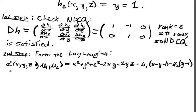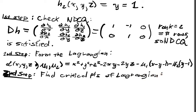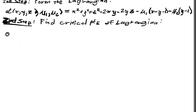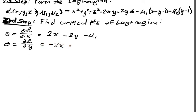And now we figure out what the critical points have to satisfy. So the critical points, so the second step, or the third step, rather, is find the critical points of the Lagrangian. So we compute, we have to have that zero equals dL/dx, and we see that that's going to be 2x minus 2y minus mu1. Zero is going to be equal to dL/dy equals minus 2x plus 2y minus 2z plus mu1 minus mu2.